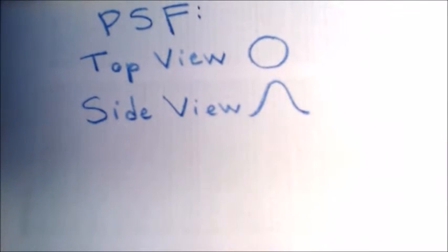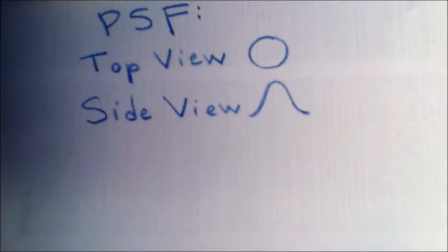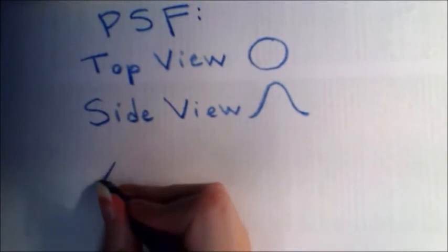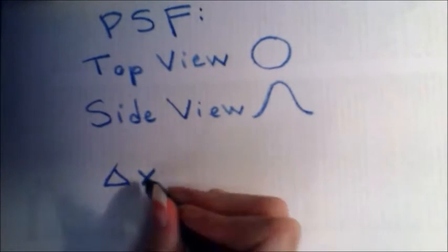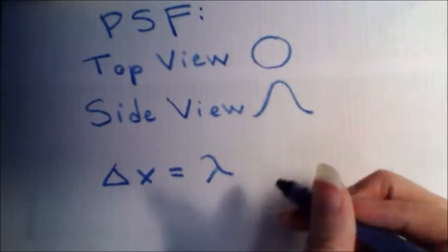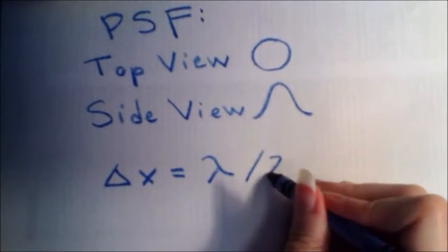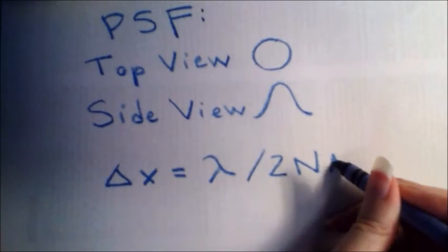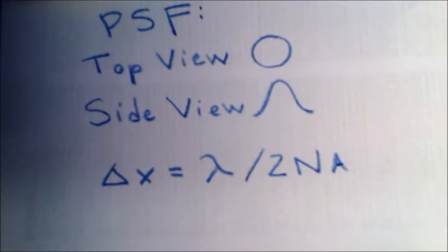In order to be resolvable by an optical microscope, the fluorophores must be spaced at least this distance apart to be separately resolvable. Since visible light is on the order of hundreds of nanometers, and the best possible NA values are around 1.3 to 1.4, the size of the diffraction spot, or point spread function, poses a barrier for optical imaging of nanoscale materials.